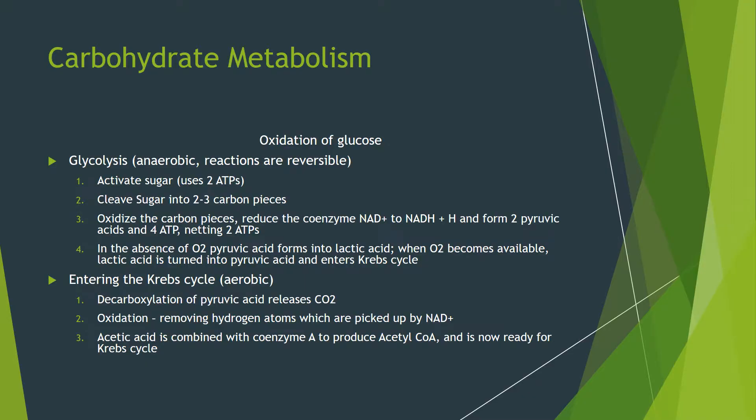Carbohydrate metabolism — oxidation of glucose. Glycolysis, which is an anaerobic reversible reaction, starts with sugar activation which uses two ATPs, then cleaves the sugar into two three-carbon pieces, oxidizes the carbon pieces, reduces the coenzymes NAD to NADH plus hydrogen, and forms two pyruvic acids and four ATPs, adding two net ATPs. In the absence of O2, pyruvic acid forms into lactic acid. When O2 becomes available, lactic acid is converted back to pyruvic acid and enters the Krebs cycle.